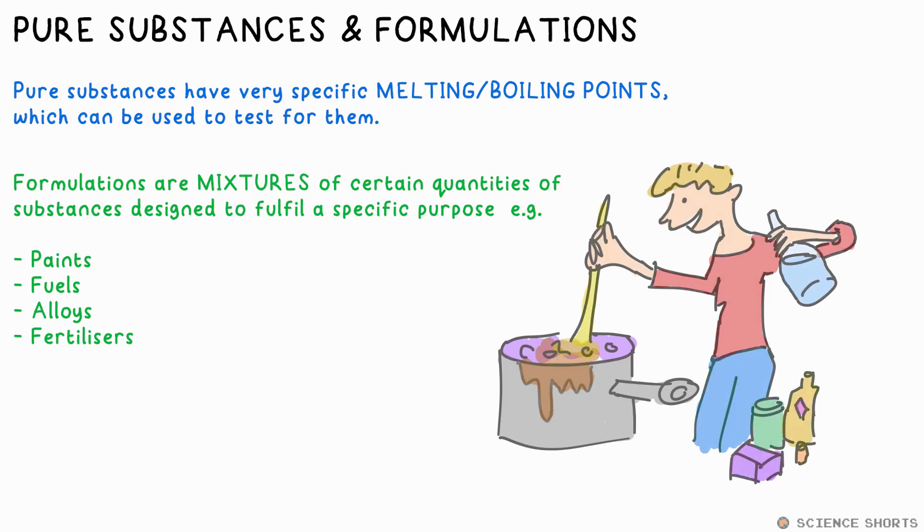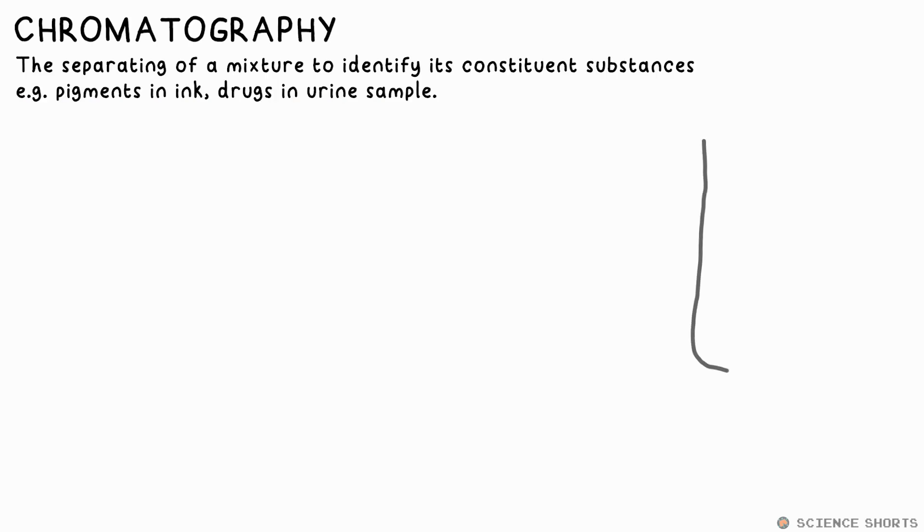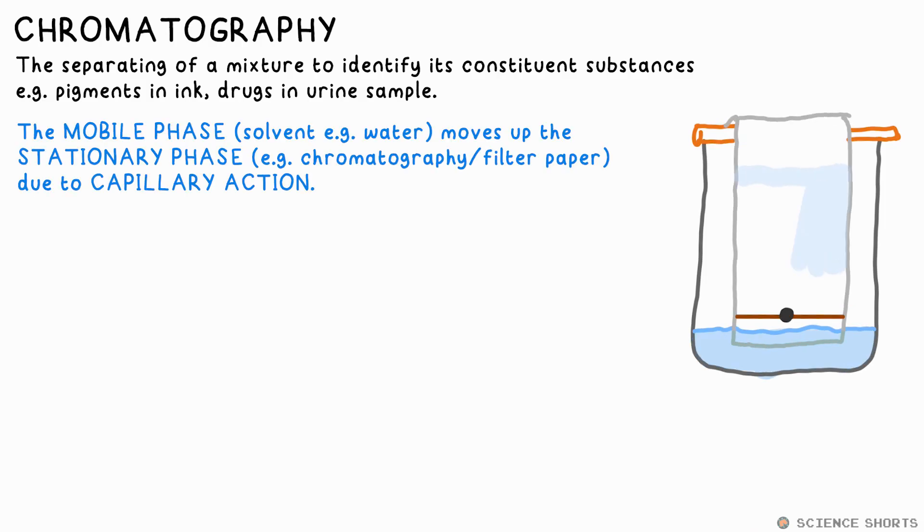Chromatography is a way of separating substances in a mixture, for example pigments in inks or drugs in a urine sample. The stationary phase - often special chromatography paper or just filter paper - is what the substances move up with the help of the mobile phase, often just water, which rises up the paper due to capillary action, dragging lighter particles further up the stationary phase.